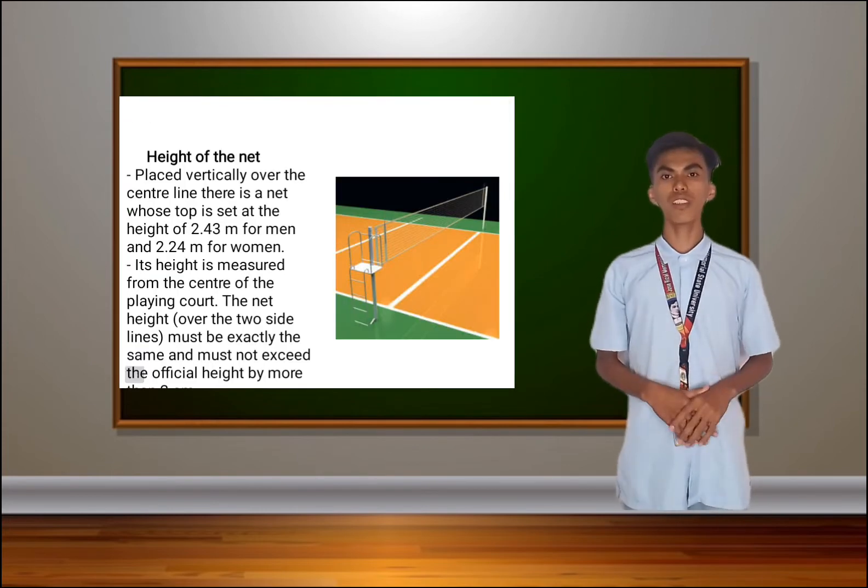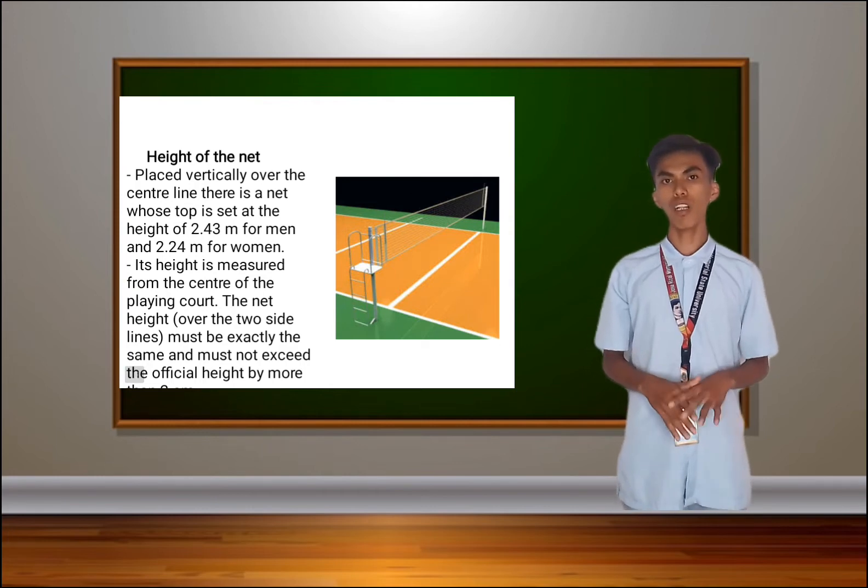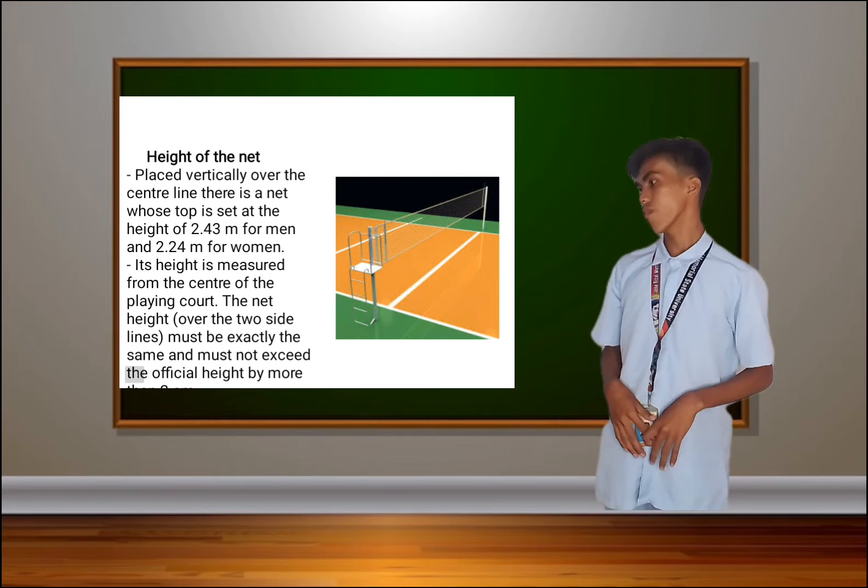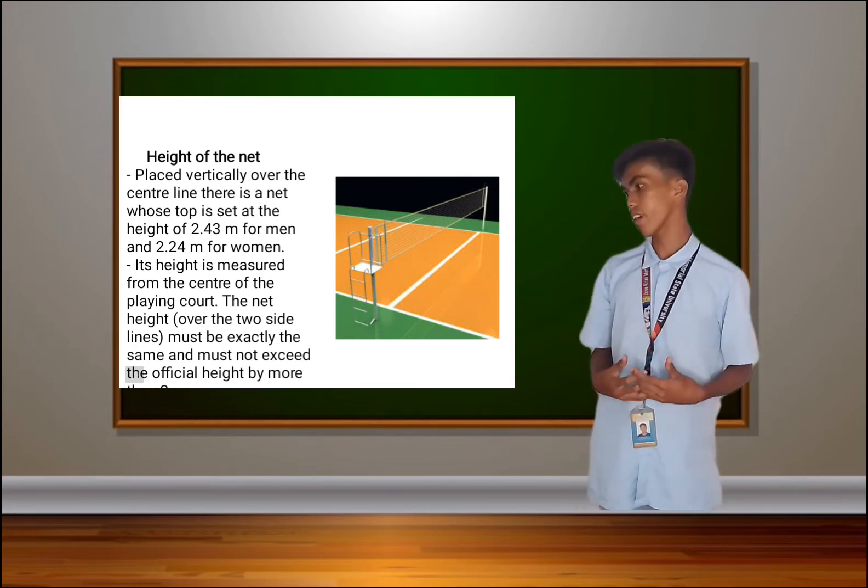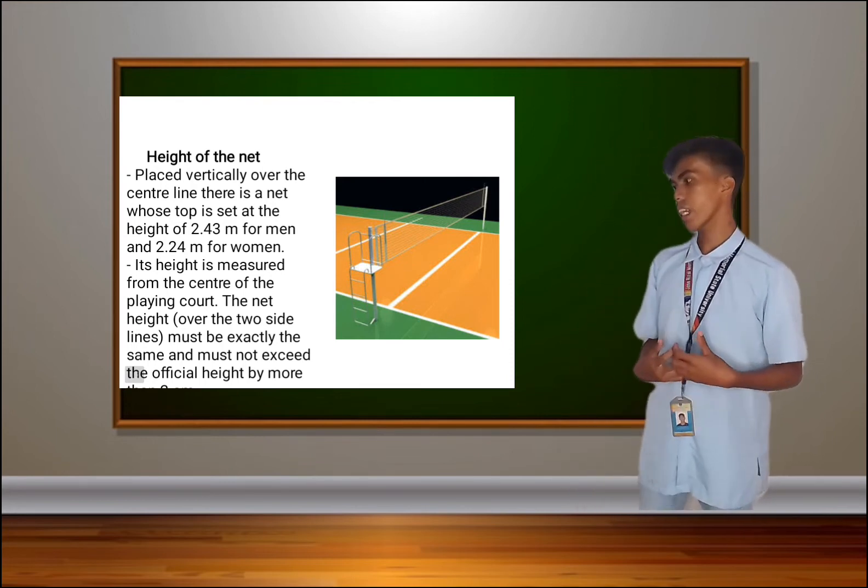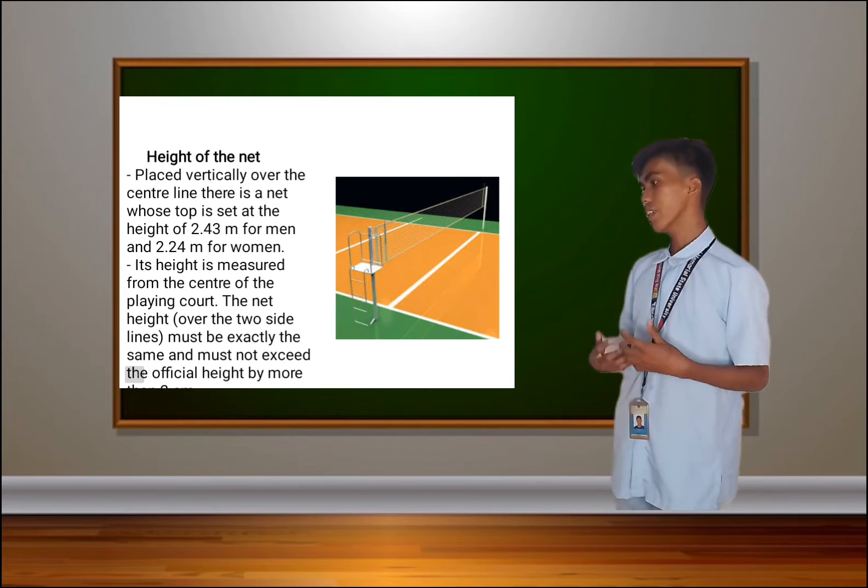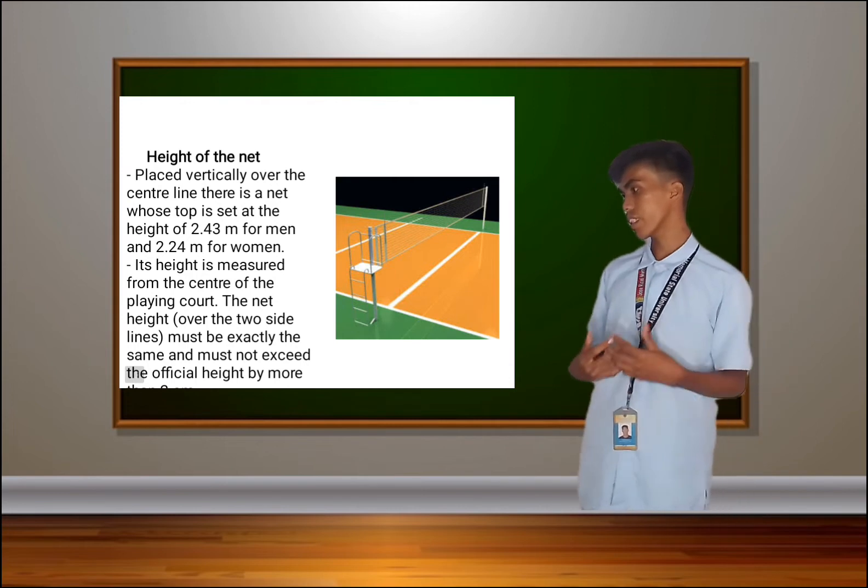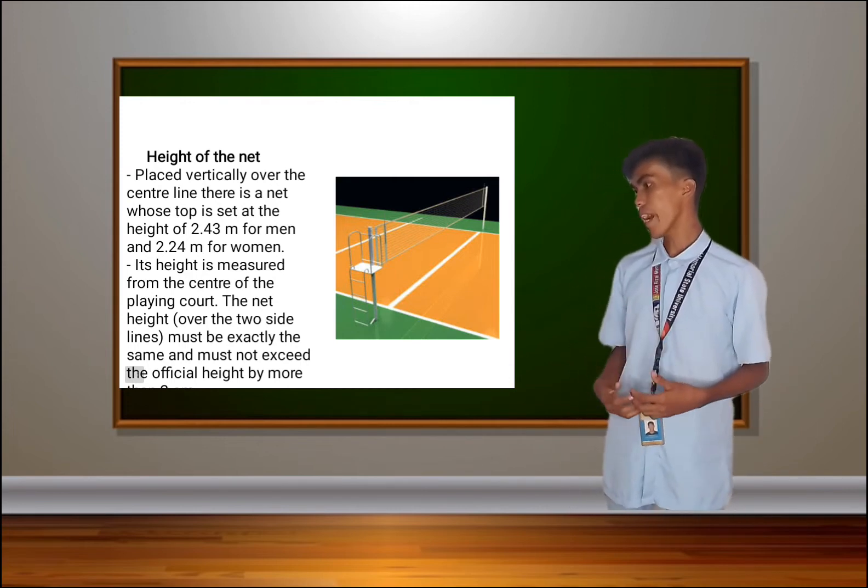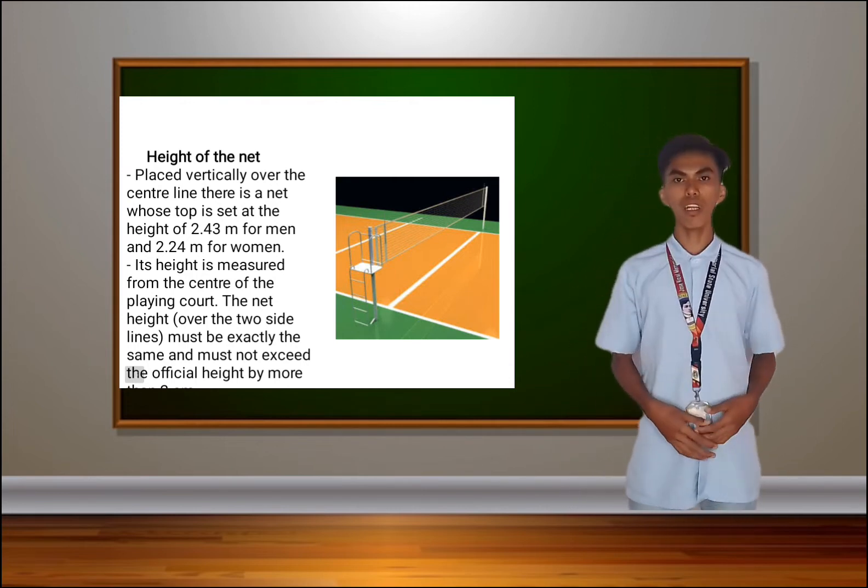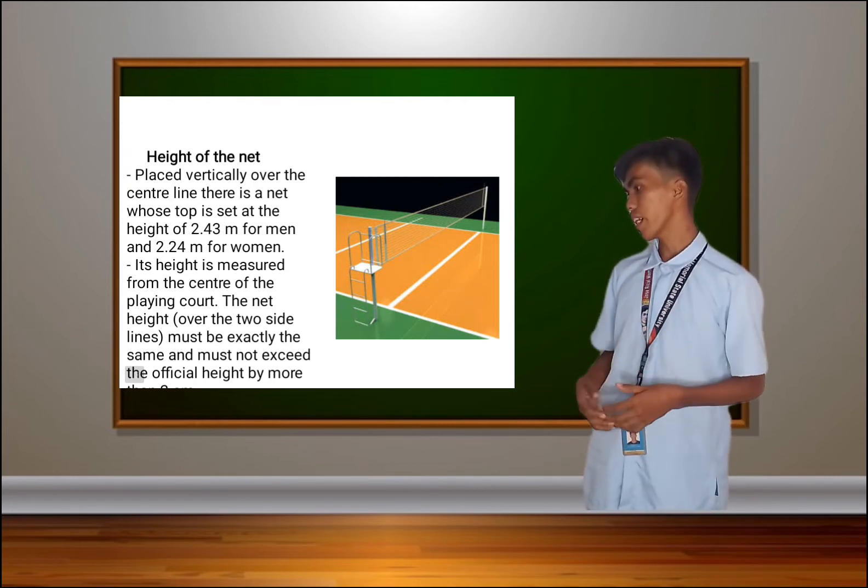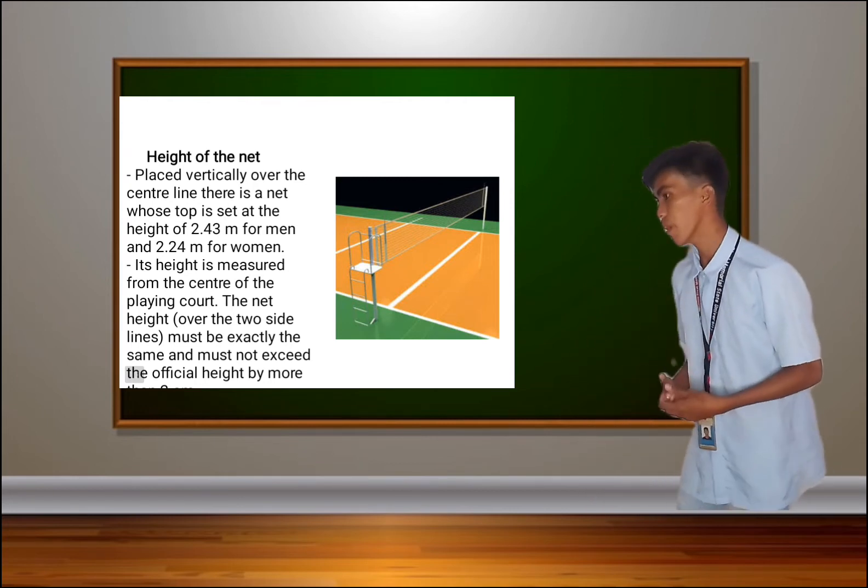Let's move on to another facility and equipment in volleyball, which is the net and post. First topic is the height of the net. Placed vertically over the center line, there is a net whose top is set at the height of 2.43 meters for men and 2.24 meters for women. Its height is measured from the center of the playing court.